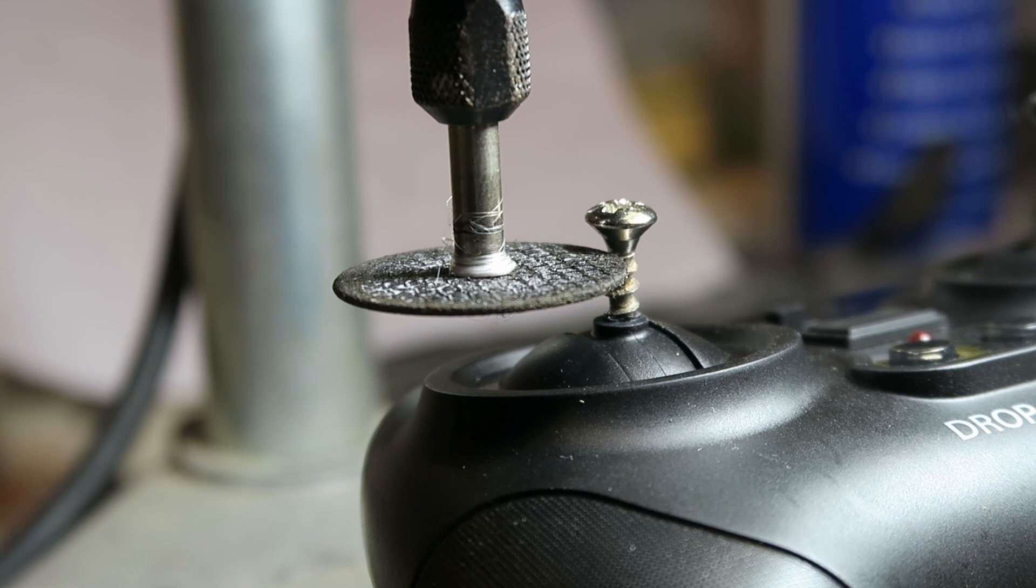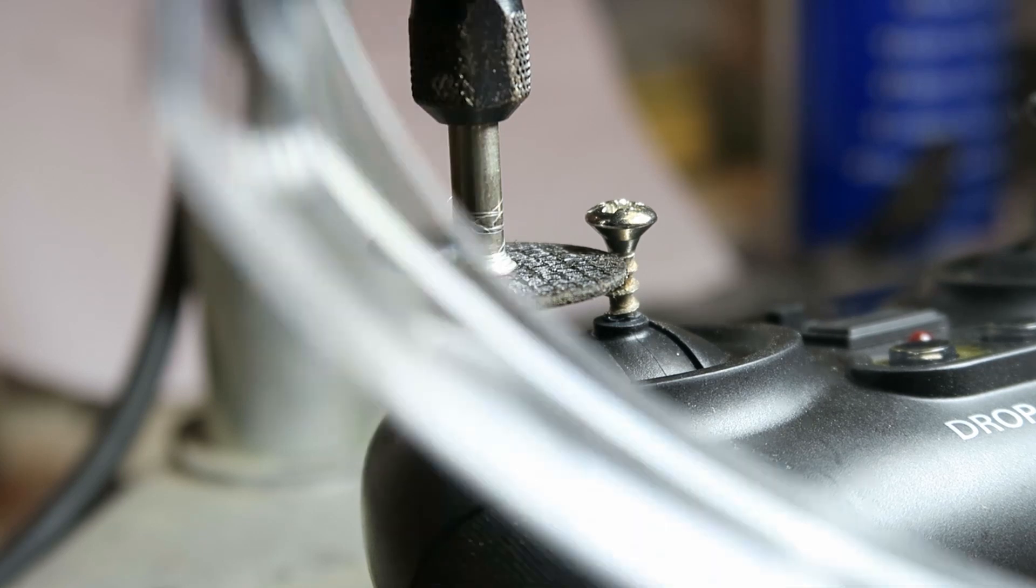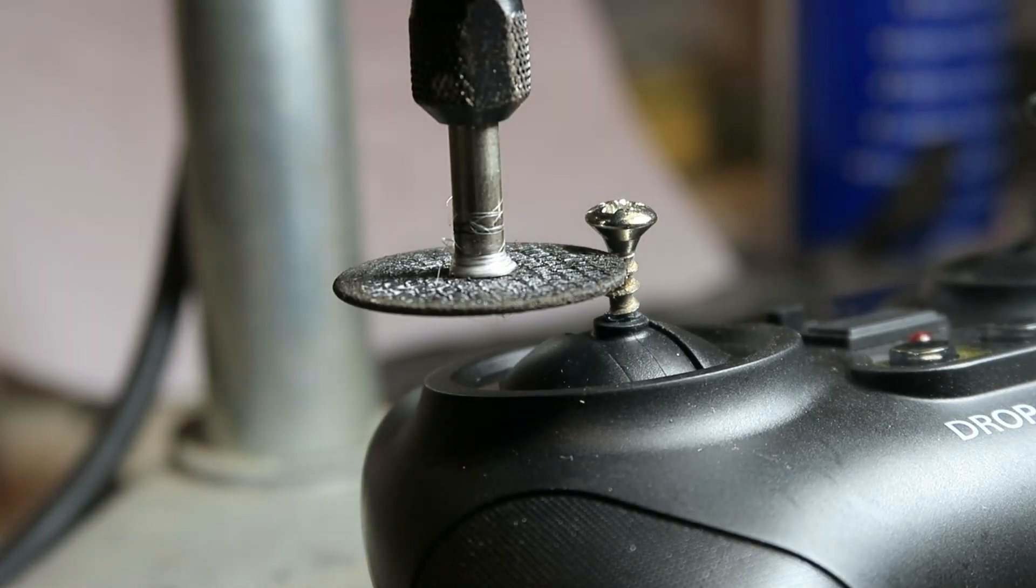I've got my Dremel set up with the cutoff wheel now and its own little pillar support, and of course, safety squints. You only get one pair of eyes.